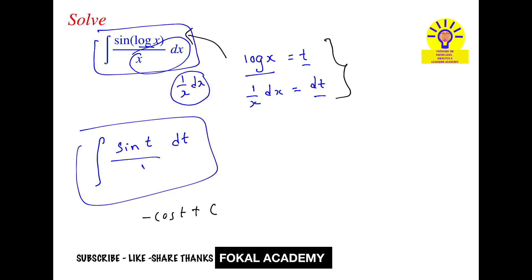But here assume that t as log x. Now convert overall this t terms in terms of x, that is minus cos of t means log x plus constant. So this is the required integration value for the given problem and this is the process of simplification.